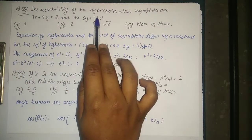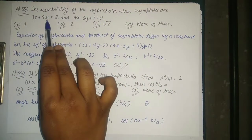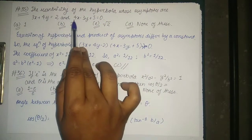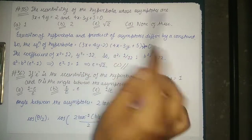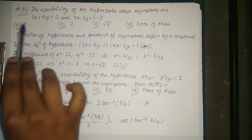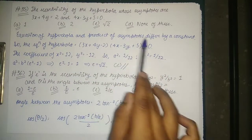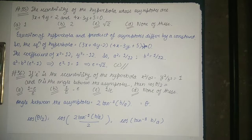The eccentricity of the hyperbola whose asymptotes are 3x + 4y = 2 and 4x - 3y + 5 = 0 can be given by: option A) 1, option B) 2, option C) root 2, and option D) none of these.